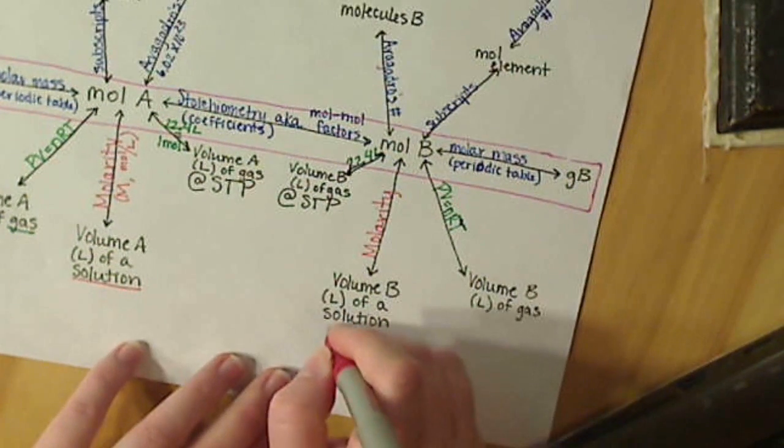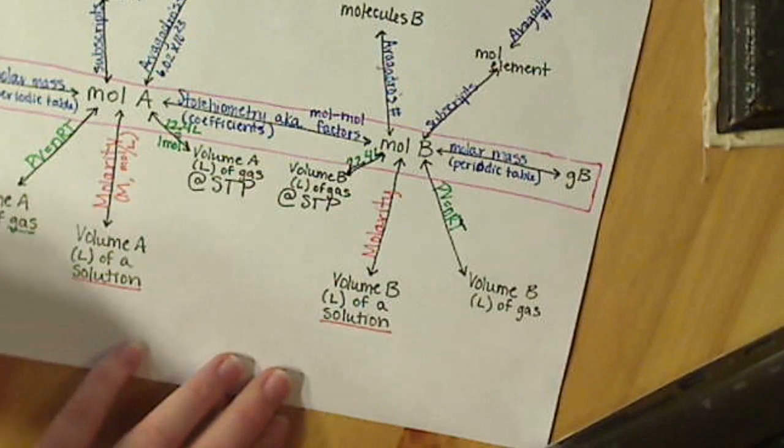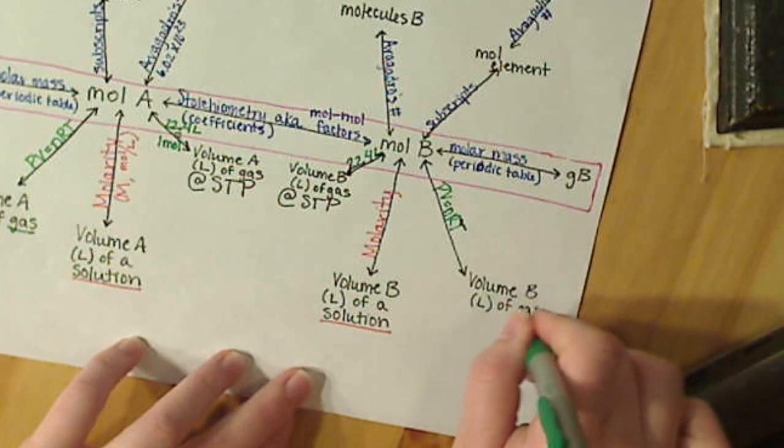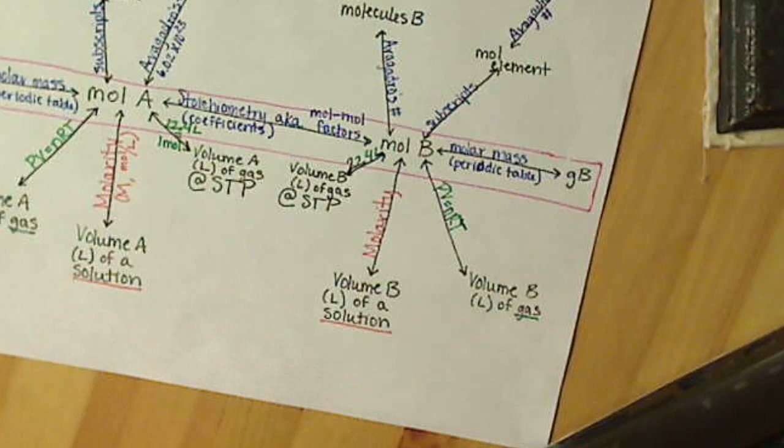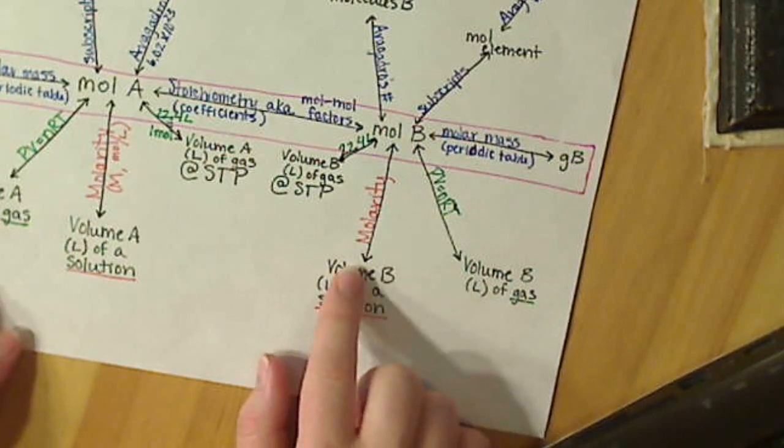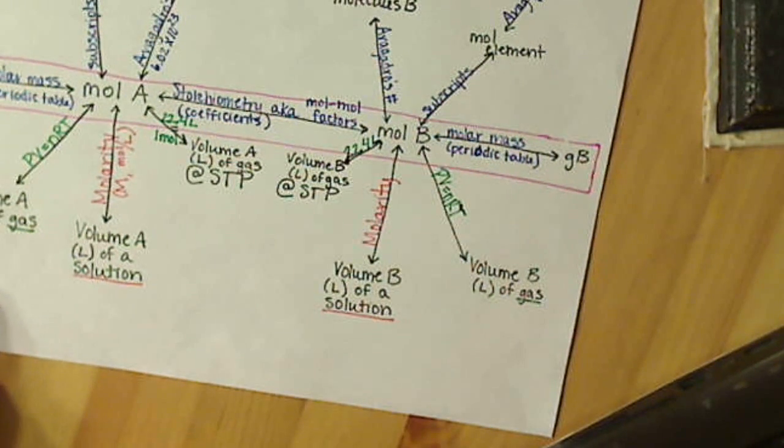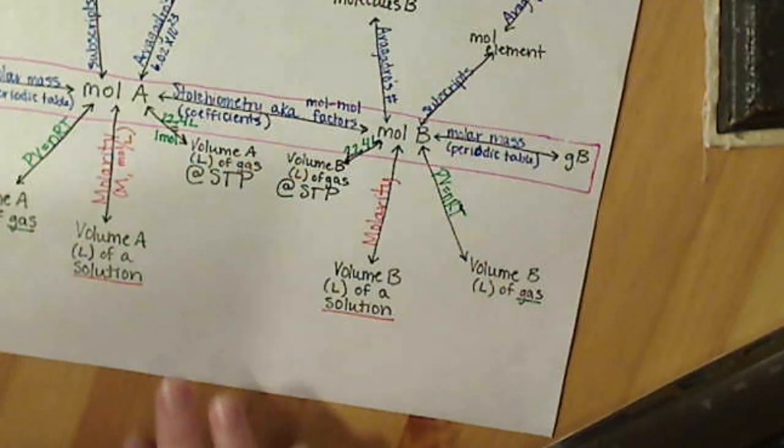The distinction between these two pathways here, they're both dealing with volumes in liters, except when we have a solution we're dealing with molarity, and when we have a gas we're going to use PV=nRT. And to complete our mole road, we can do the same conversion from moles of B to volume of B in liters of a solution. So let's work through an example that utilizes this pathway.